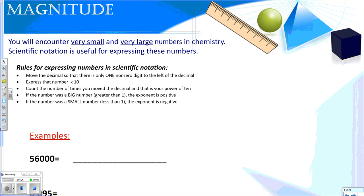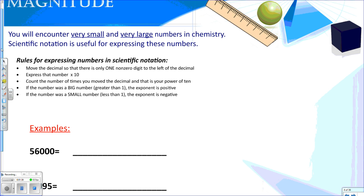In chemistry this year, you're going to encounter very small and large numbers. Scientific notation is going to be useful. There are a couple of steps involved in converting a number into scientific notation.